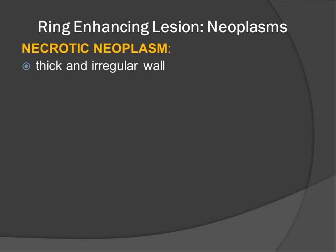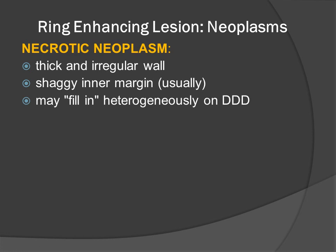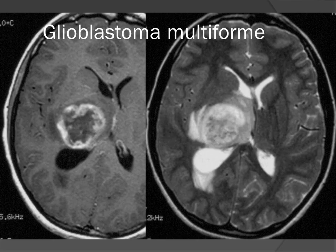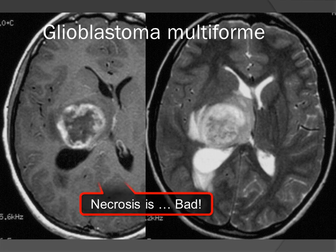When we have a neoplasm — a necrotic neoplasm, which is typically very high grade — it will have a thick and irregular wall and a very shaggy inner margin. With delayed scanning you can oftentimes see heterogeneous fill-in within the center of the necrotic rim. The characteristics we look for are: irregular, thick and variable wall, shaggy inner margin, complex shape, vasogenic edema, and the rim may or may not be hypointense on T2. There is typically increased diffusion due to cell lysis and necrosis. Here is a classic glioblastoma multiforme in the thalamus with a very thick and shaggy margin of enhancement and central necrosis.